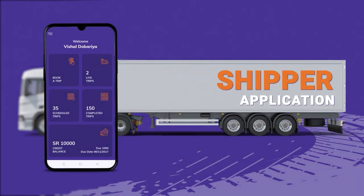Welcome to the shipper app video. This is the application that the shipper — or customer — will use when they want to schedule a pickup and drop-off of goods to transport. After signing up, this is the home screen the shipper will see: statistics for booked trips, how many trips are live, how many transits are scheduled for the future, how many are completed, and the credit balance available for payments.